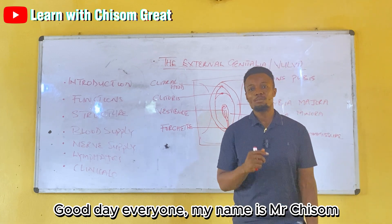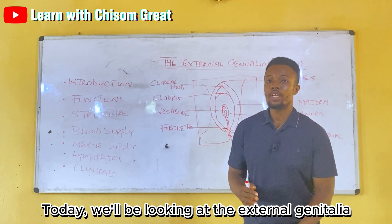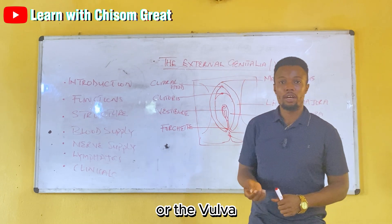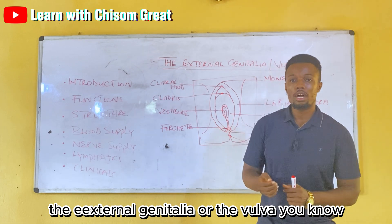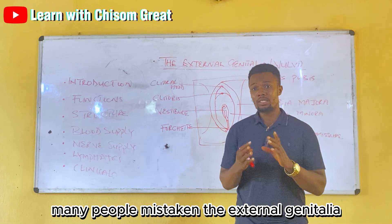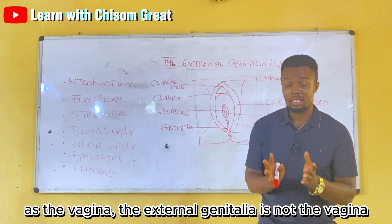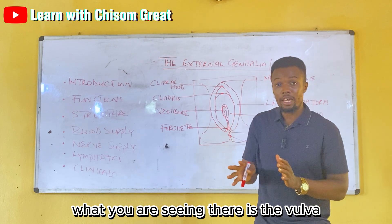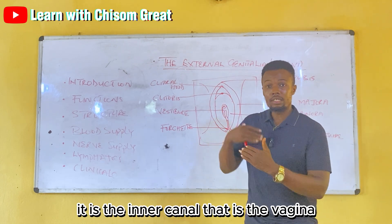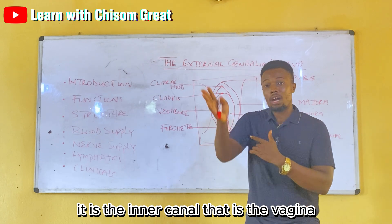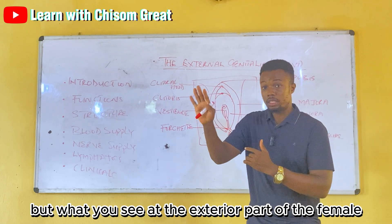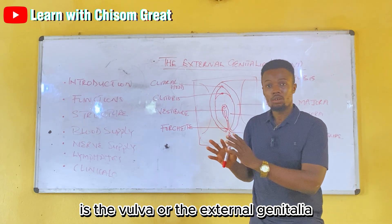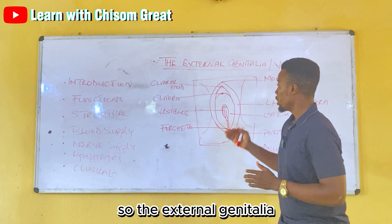Good day everyone, my name is Mr. Chissom. Today we'll be looking at the external genitalia, or the vulva. Many people mistake the external genitalia for the vagina. The external genitalia is not the vagina — what you are seeing is the vulva. It is the inner canal that is the vagina. What you see at the exterior part of the female is the vulva, or the external genitalia.